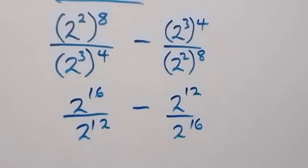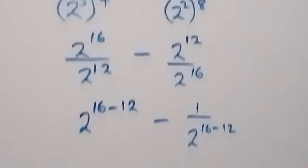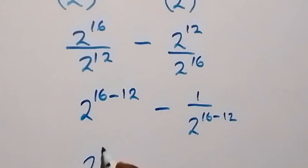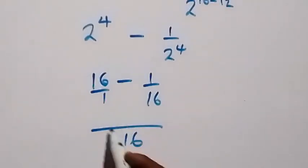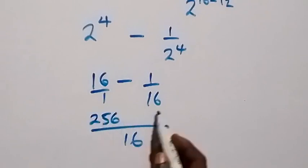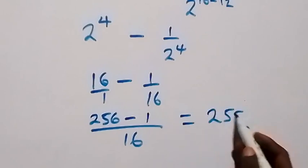Applying the law of indices, this becomes 2 raised to power 16 minus 12, then minus 1 over 2 raised to power 16 minus 12. That gives us 2 raised to power 4, then minus 1 over 2 raised to power 4. So we have 16 minus 1 over 16. Bringing this together: 16 times 16 gives 256, minus 1, that's 255 over 16. This equals 255 over 16.